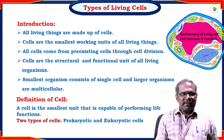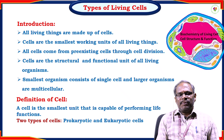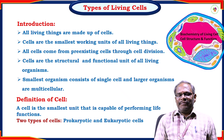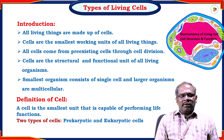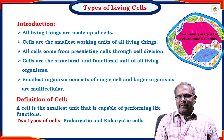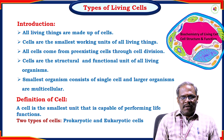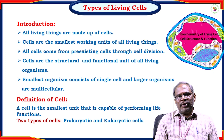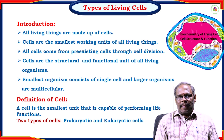Introduction to the types of living cells. All living things are made up of cells. Cells are the smallest working units of all living things. All cells come from pre-existing cells through cell division. Cells are the structural and functional units of living organisms. The smallest organism consists of a single cell and the larger organism consists of multicellular organisms. For example, human beings and plant cells are multicellular. Single cell organisms are prokaryotic cells like bacteria.